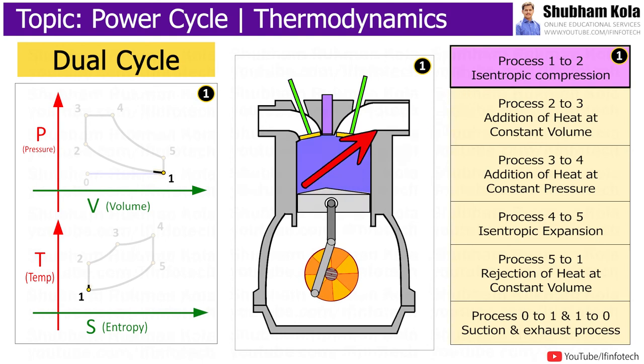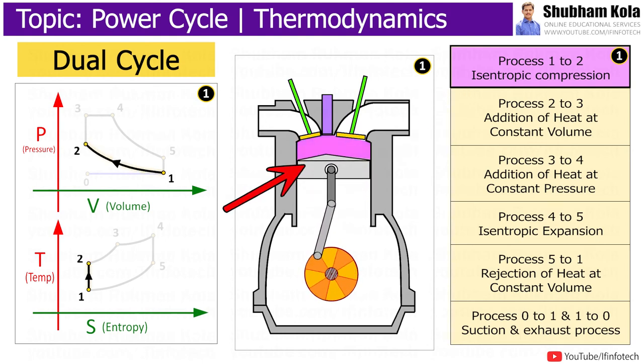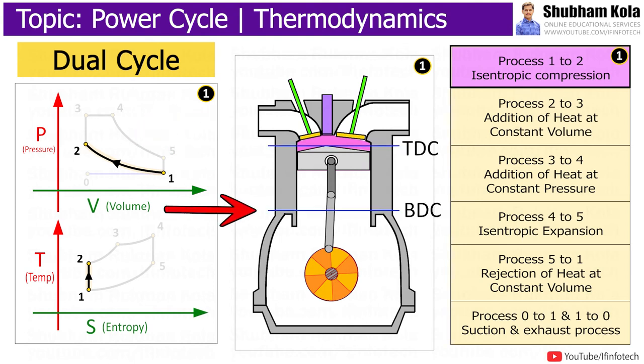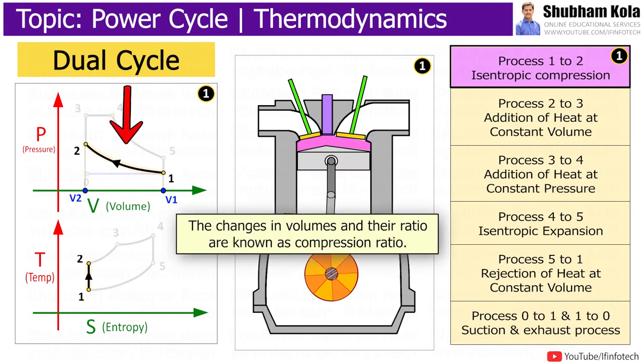Process 1 to 2 is isentropic compression. Here gas is compressed adiabatically from state 1 to state 2 as piston moves from bottom dead center to top dead center. The surroundings do the work on gas, increasing its internal energy and compressing it. On the other hand, entropy remains unchanged. The change in volume and their ratio V1 to V2 is known as compression ratio.